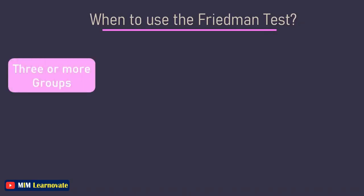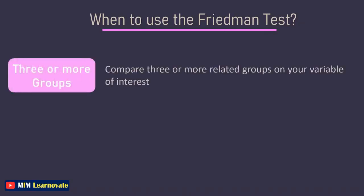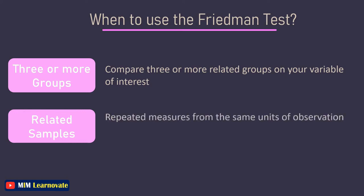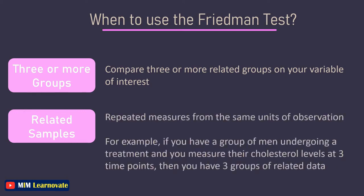The Freedman Test can be used to compare 3 or more related groups on your variable of interest. Related samples means that you have repeated measures from the same units of observation. For example, if you have a group of men undergoing a treatment and you measure their cholesterol level at 3 points, then you have 3 groups of related data.